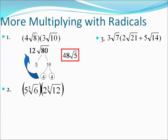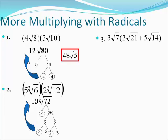Try number two — pause the video until you're ready. On number two, five times two is ten and six times twelve is seventy-two, so we start off with ten cube root of seventy-two. Break down 72: two times thirty-six, thirty-six is six times six, and each six breaks down into twos and threes. This is a cube root, so it takes three of the same number to make a group — we have that with the twos. When the twos come out, they multiply by the ten to make twenty, and the two threes left over multiply to make nine left inside. So twenty cube root nine is the answer.